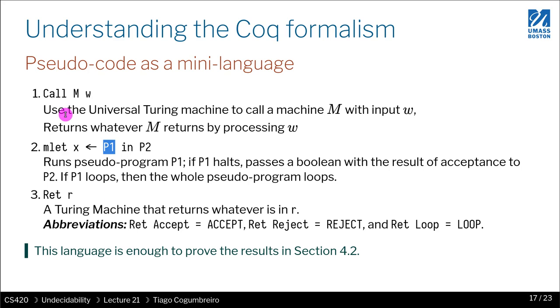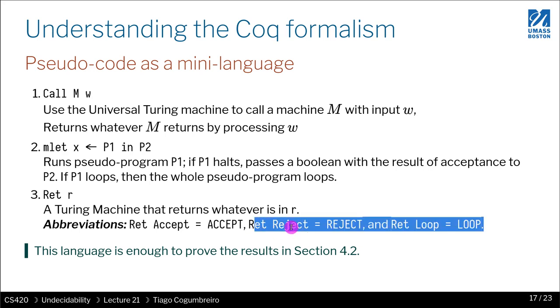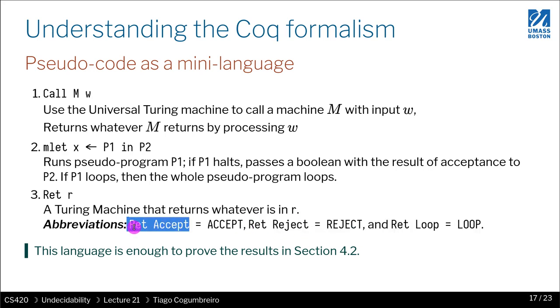Another thing you will see is the return, so there's basically three constructs. With these three constructs you can do a lot of things. The last thing is return r, which is to say you either accept, reject, or loop. If you write in caps lock ACCEPT or REJECT or LOOP, that corresponds to returning loop or returning reject or returning accept. That's a very basic Turing machine. What each of these things represents is a Turing machine.